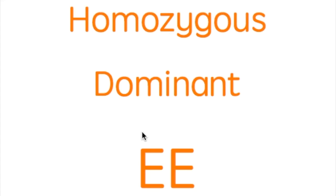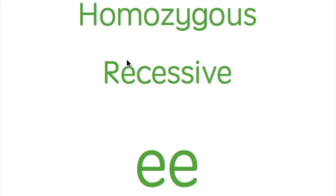Homozygous dominant means two of the same dominant gene, expressed as two capital letters. For example, homozygous dominant brown eyes would be two capital B's — there are no recessive hidden genes. Homo means same, zygous means same egg, dominant means capital letters. So two capital E's is homozygous dominant. Homozygous recessive is lowercase e lowercase e — that's the gene that could get hidden if a dominant is present.